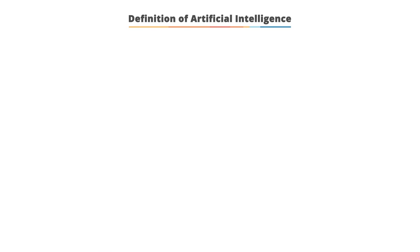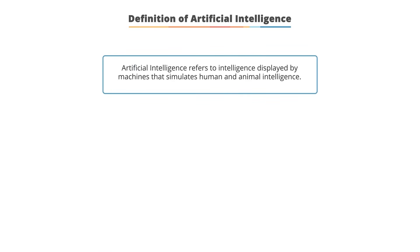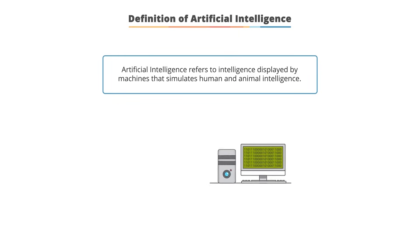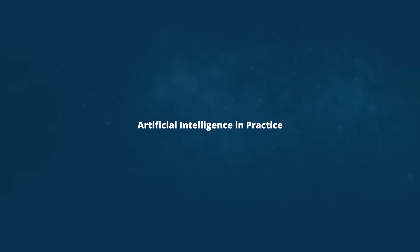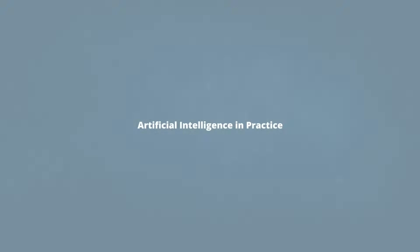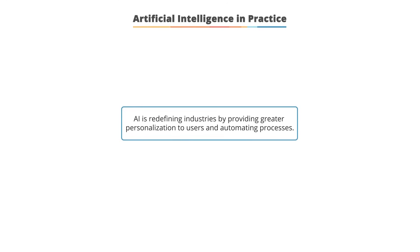So what is artificial intelligence? Artificial intelligence refers to the intelligence displayed by machines that simulates human and animal intelligence. It involves intelligence agents — autonomous entities that perceive their environment and take actions that maximize their chances of success at a given goal. AI is a technique that enables computers to mimic human intelligence using logic; it is a program that can sense, reason, and act.